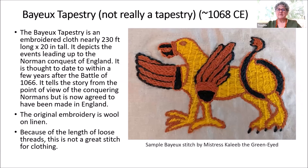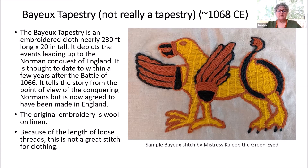The Bayeux Tapestry — which, as you may or may not know, isn't really a tapestry. It's an embroidered cloth nearly 230 feet long and 20 inches tall, depicting the events leading up to the Norman conquest of England. It is thought to date within a few years after the Battle of 1066. It tells the story from the point of view of the conquering Normans, but people agree it was made in England. The original embroidery is wool on linen. Note that because of the length of the loose threads, it's not a great stitch for clothing — you can catch that thread on something if you're brushing your hand against a railing.